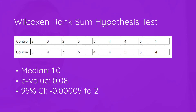She does her analysis using the Wilcoxon Rank Sum Test and finds a median difference of 1.0, with a p-value of 0.08 and a confidence interval from just below 0 to 2. The p-value is just above our level of significance, and the confidence interval includes zero — meaning the null hypothesis of no difference falls inside the confidence interval. In this case, we failed to prove that there is a difference between the two groups.